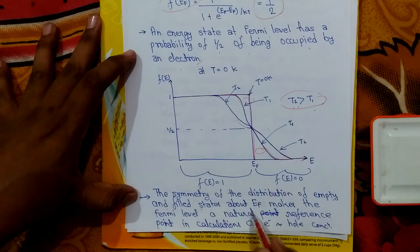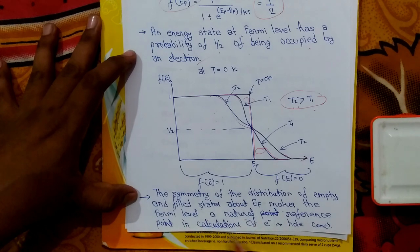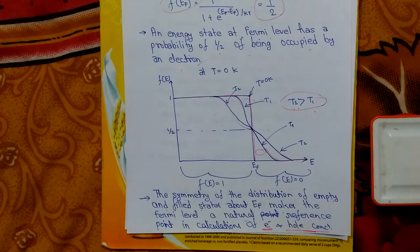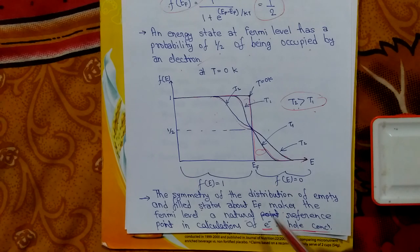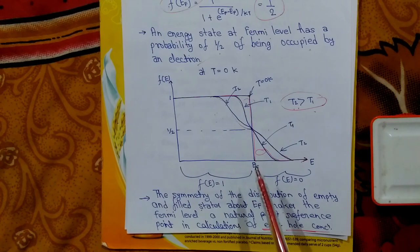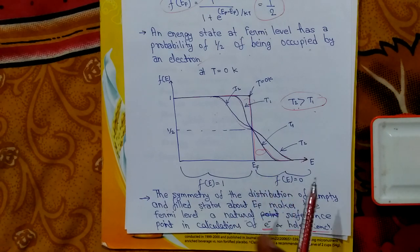The distribution of empty and filled states about EF makes the Fermi level a natural reference point in the calculation of electron and hole concentration. Electron and hole concentration can be calculated using EF as a natural reference point because electrons and holes are present above or below EF respectively.